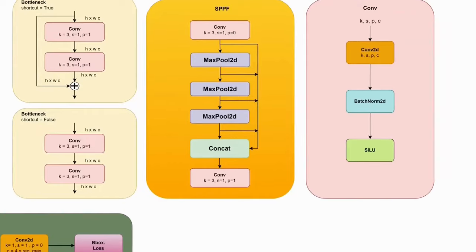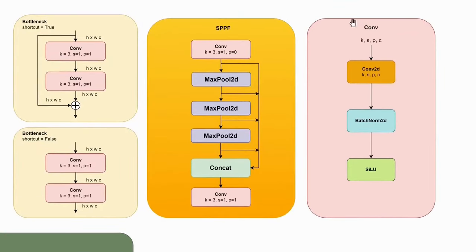The most commonly used block is the convolutional block. In YOLOv8, a convolutional block consists of a 2D convolutional layer, a 2D batch normalization, and a SiLU activation function. They are all fused together into a single convolutional block.